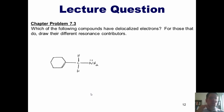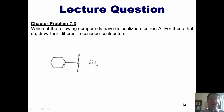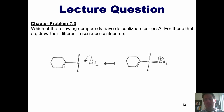Here's another example from our question set. Can these lone pairs on the nitrogen be pushed into this double bond in some fashion to give me a legitimate resonance contributor? I want you to imagine doing that. If we attempted that, we would form a carbon-nitrogen double bond. As we used with the earlier example involving the oxygen in the ring, do you see any problems with that molecule?